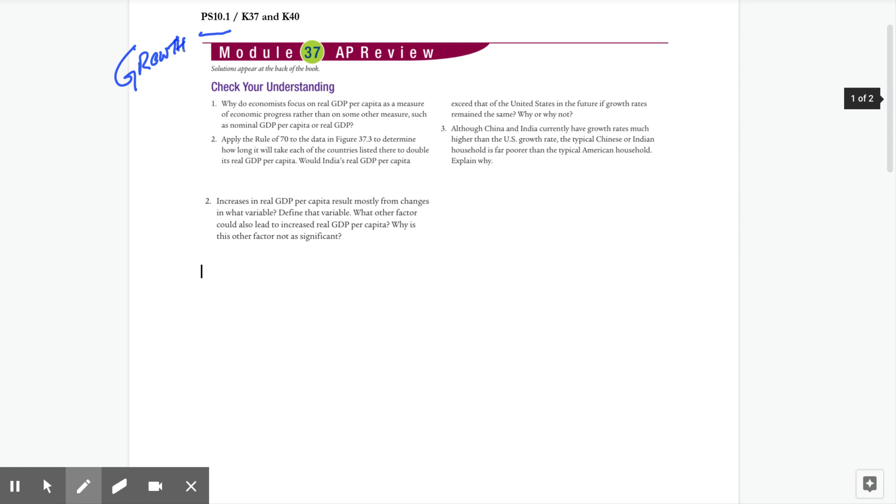For module 37, this is the FRQ, and I've gone ahead and just screenshotted them out and clipped them out for you here. So we're going to go ahead and take a look at first the check your understanding number one, and that one says, why do economists focus on real GDP per capita as opposed to nominal or real GDP?